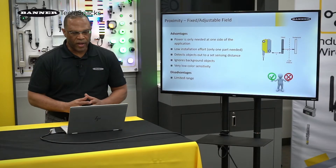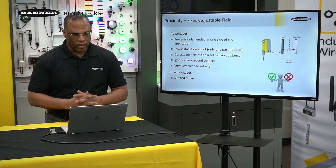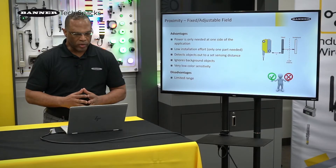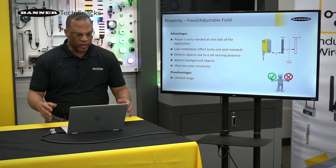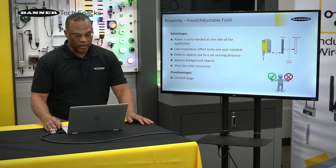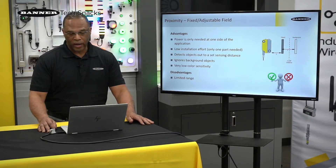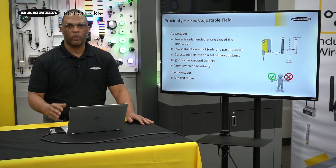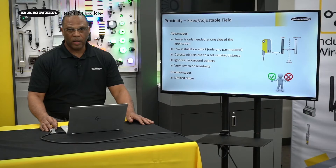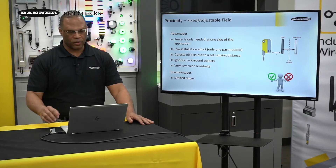Some of the advantages of using diffuse and fixed field: you only have to power up one side, which lowers your installation cost. It can detect objects out to a set distance and ignores objects in the background that you don't want to see. Color also is really not an issue with background and adjustable field sensors.